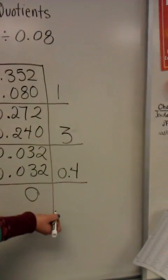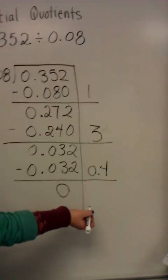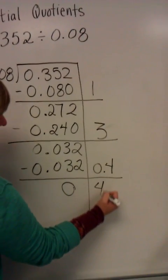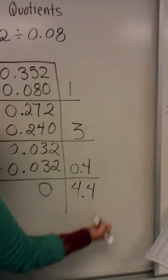When I add my numbers together that I've used in my strategy, I end up with 4 and 4 tenths.